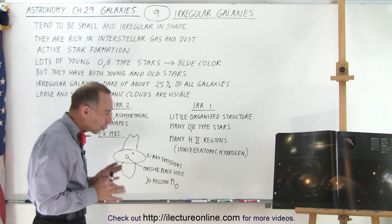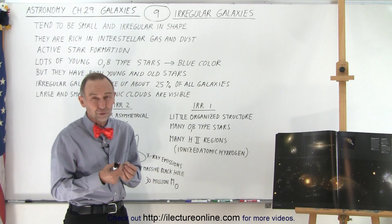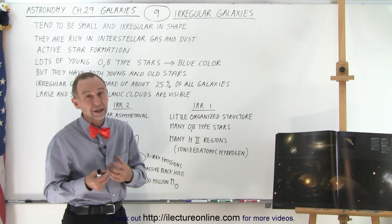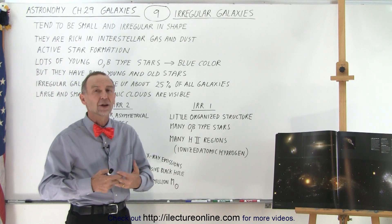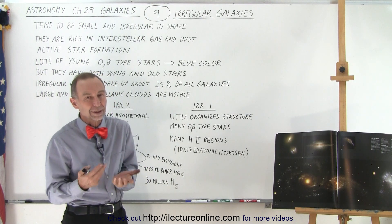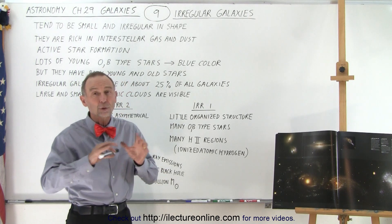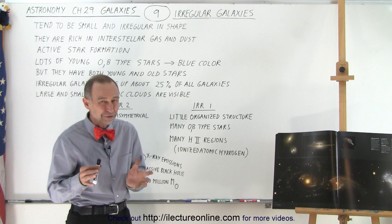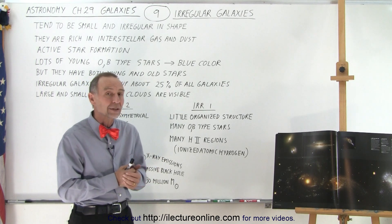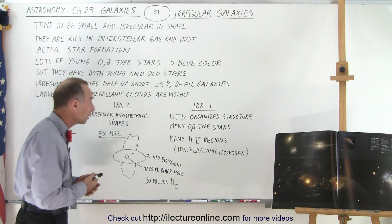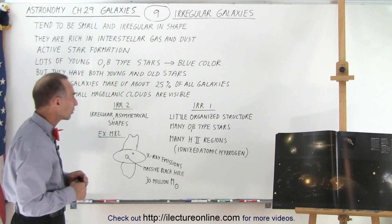Irregular galaxies make up about 25 percent of all the galaxies in the universe, though that's hard to determine because they're usually much smaller and much harder to see than large ellipticals and large spiral galaxies. In our own local group, about 10 to 15 of the galaxies are the irregular type, so they're quite abundant relative to other galaxy types.